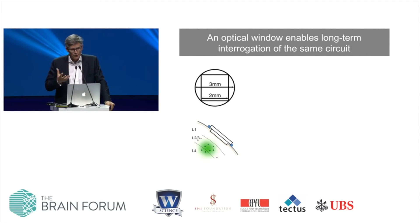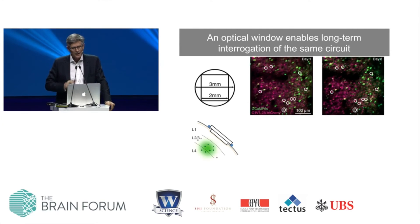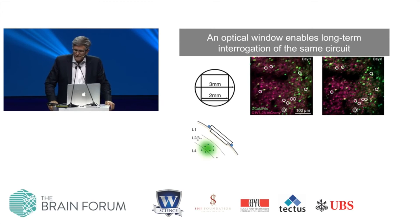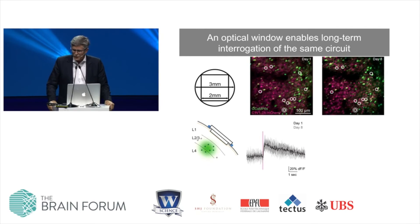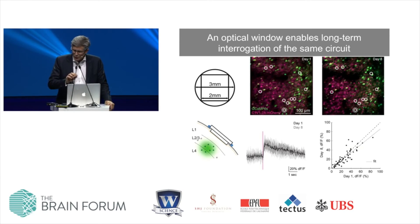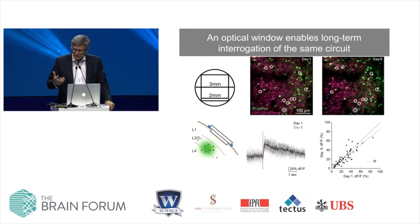We can also implant a chronic window above the region of interest for long-term experiments. We've developed tricks to localize exactly the same circuit over long time periods, identifying the same individual neurons in mouse barrel cortex and targeting them for photostimulation over a week. The response of highlighted neurons to the same photostimulus on day one and day eight is practically identical, and population data confirms reproducible responses across many neurons — positioning us to examine changes during plasticity of network dynamics in response to activating the same target neurons.